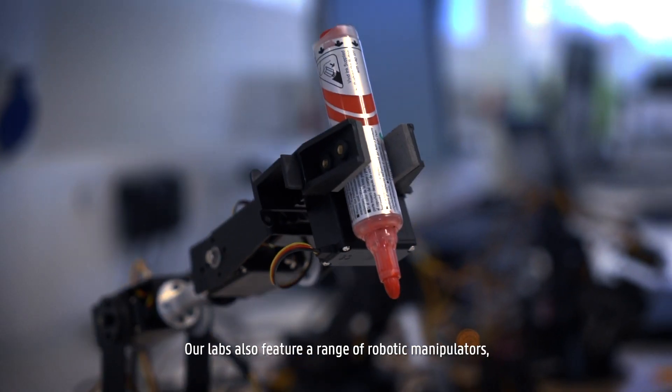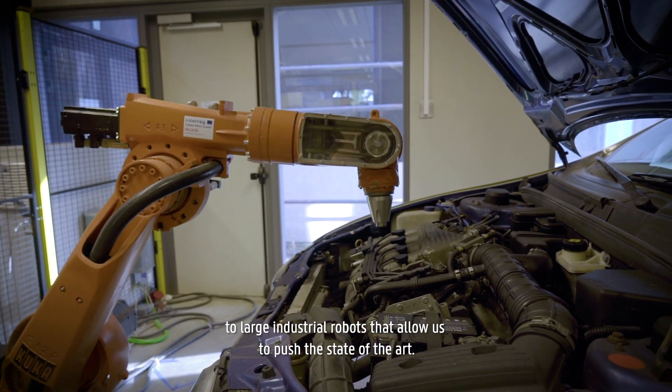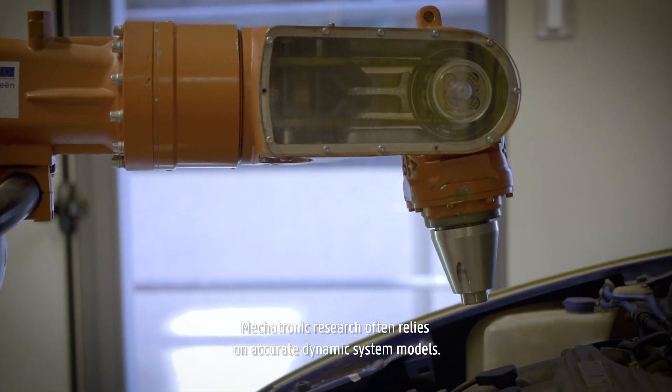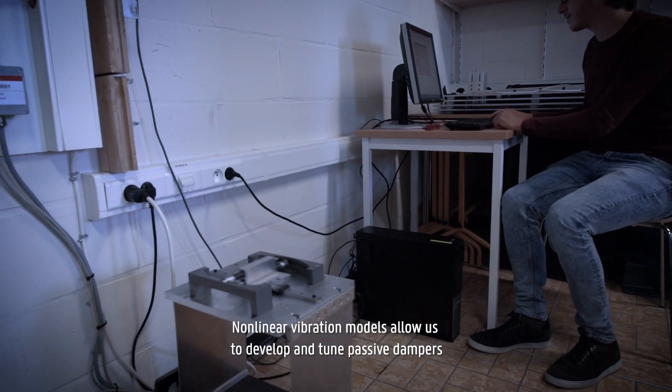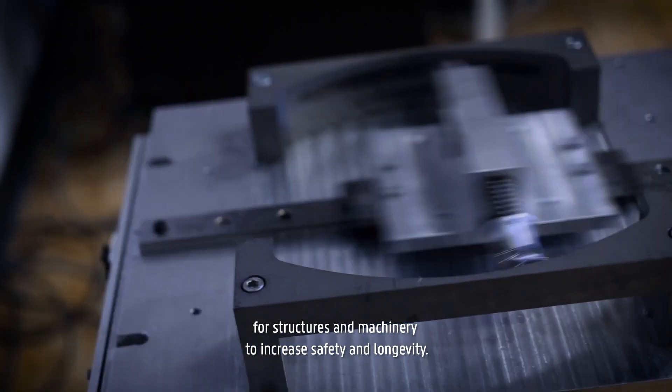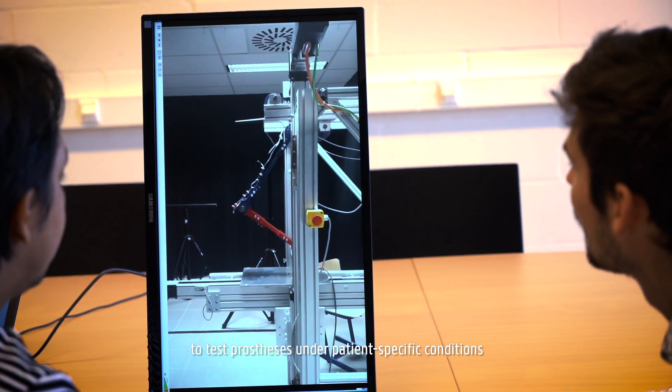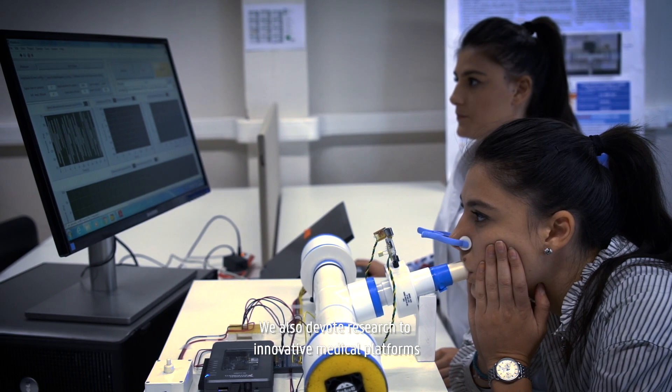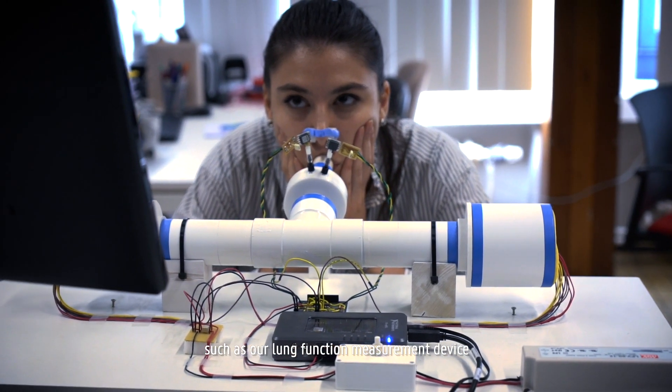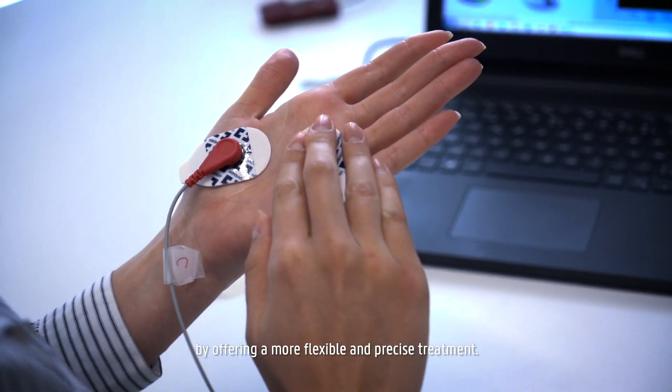Our labs also feature a range of robotic manipulators from small servo systems to study the basic principles to large industrial robots that allow us to push the state of the art. Mechatronic research often relies on accurate dynamic system models. Non-linear vibration models allow us to develop and tune passive dampers for structures and machinery to increase safety and longevity. Additionally, the department develops mechatronic systems with dynamic control to test prostheses under patient-specific conditions to ensure the best performance for each patient. We also devote research to innovative medical platforms such as our lung function measurement device and our pain assessment setup. These platforms improve patient outcome and comfort by offering a more flexible and precise treatment.